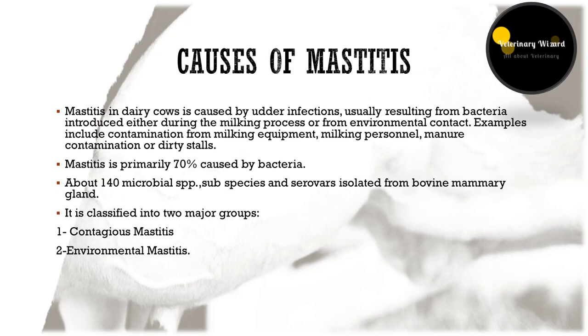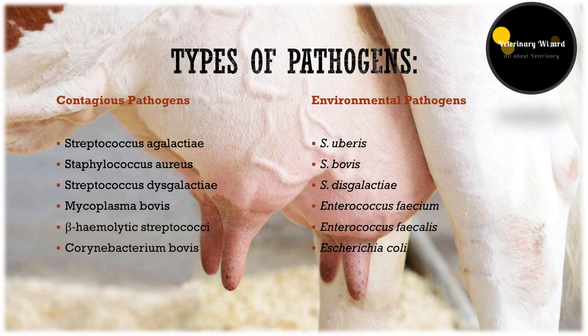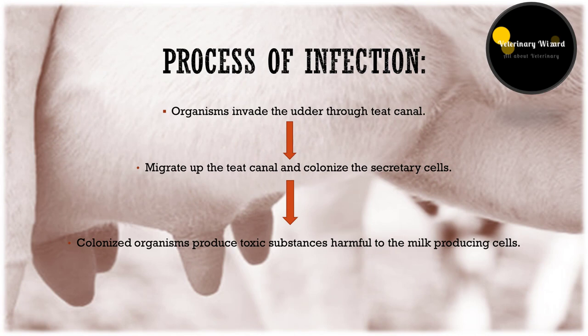The pathogens that cause contagious mastitis are Streptococcus agalactiae, Staphylococcus aureus, Streptococcus dysgalactiae, Mycoplasma bovis, beta-hemolytic Streptococci, and Corynebacterium bovis. The pathogens that cause environmental mastitis are Streptococcus uberis, Streptococcus bovis, Streptococcus dysgalactiae, Enterococcus faecium, Enterococcus faecalis, and Escherichia coli.